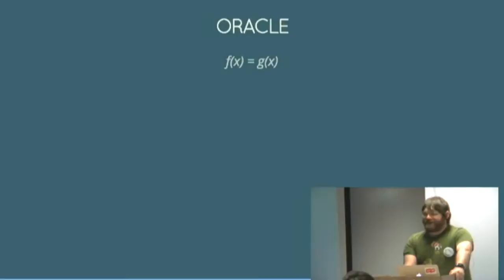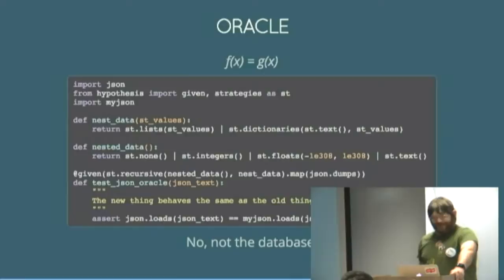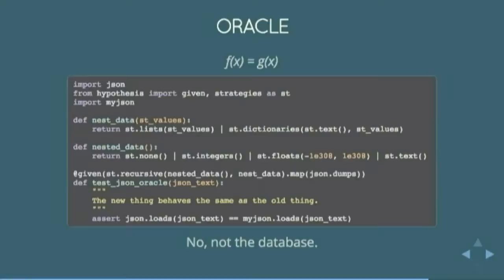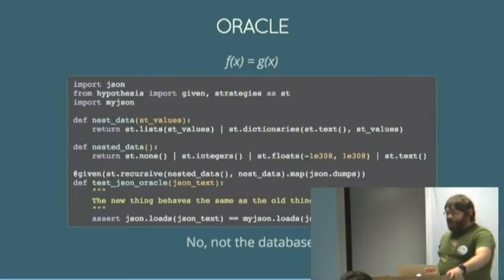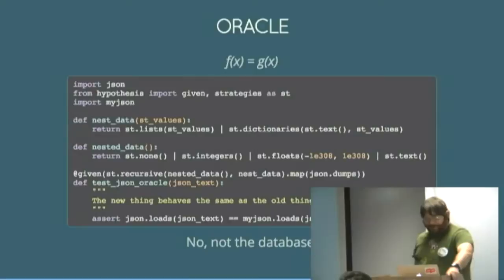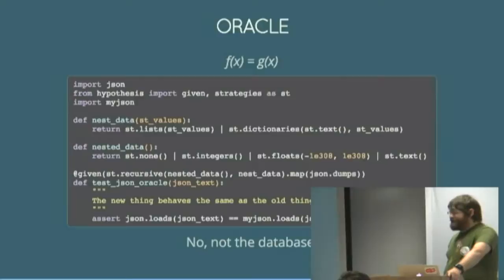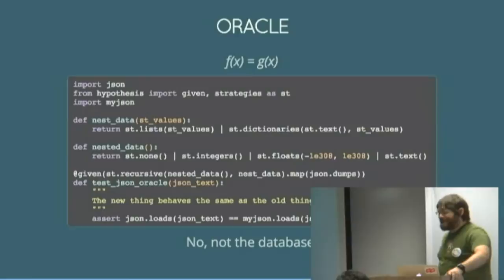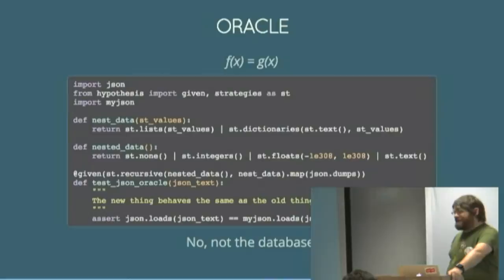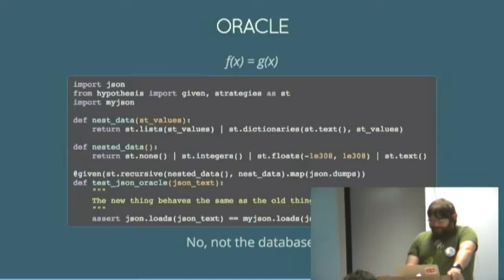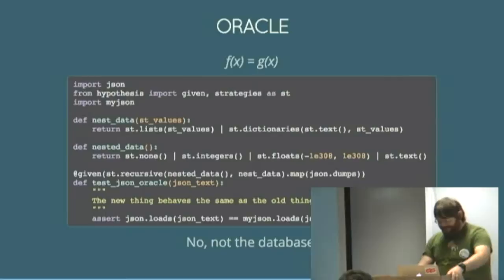And then another one which is generally not applicable but really useful when you can do it is a test oracle. You have this system which you know to be correct and you're implementing another one which you don't know to be correct. Maybe this is some old implementation that you're rewriting because you need a different architecture to implement new features. Maybe you've got a simple implementation which uses an in-memory data store and your real implementation is distributed. The functionality is the same but one of them is a lot more complicated than the other. So you can test the simple one, make sure that's correct and then use that to test your less simple one.